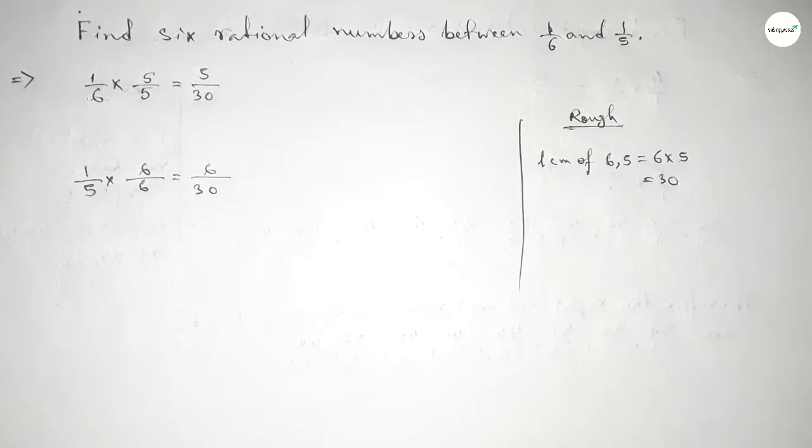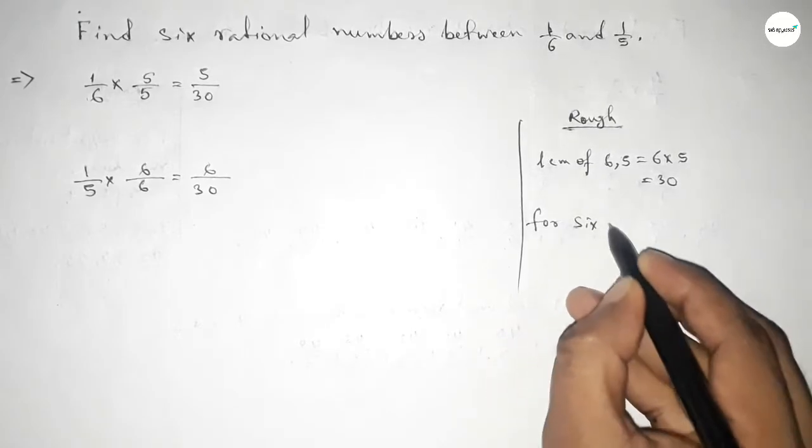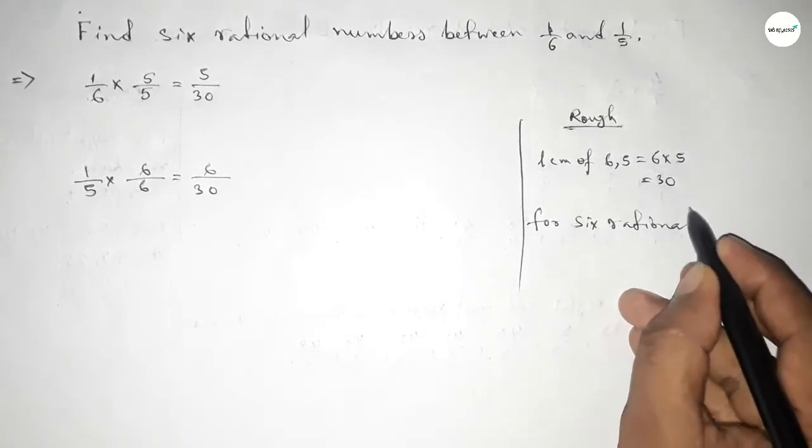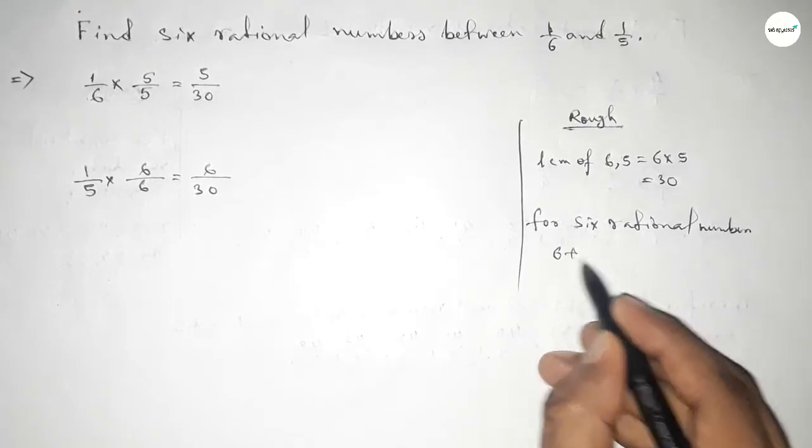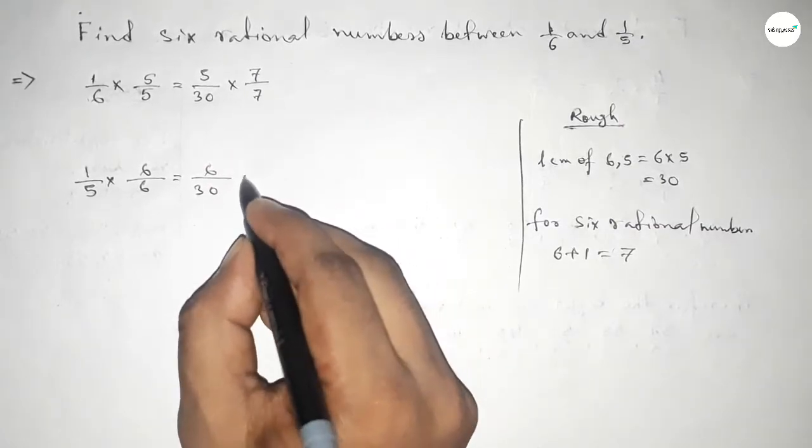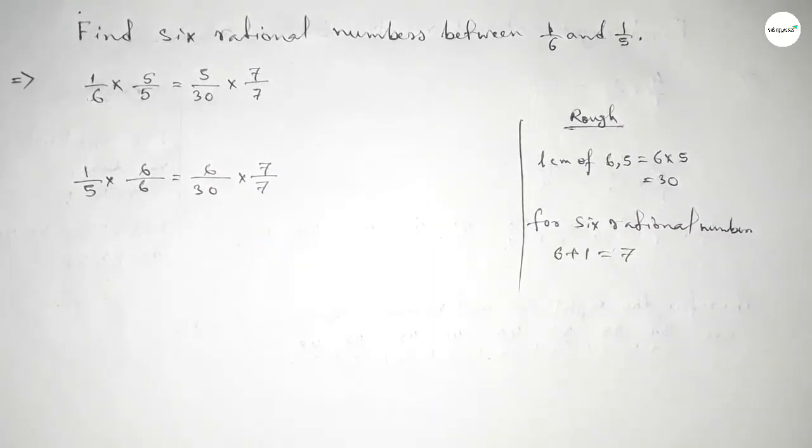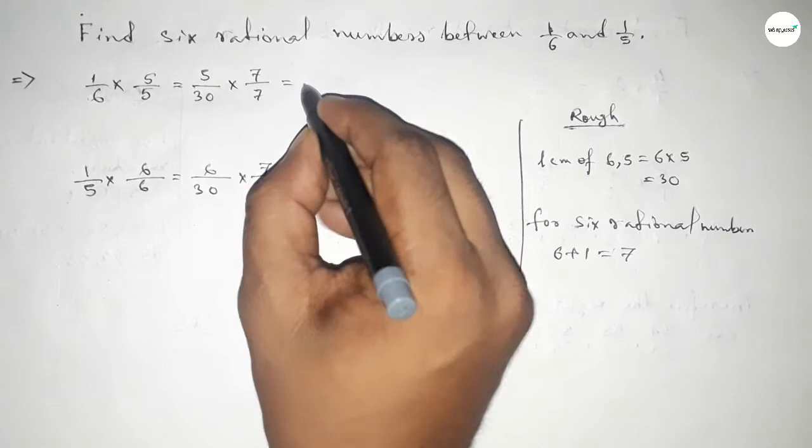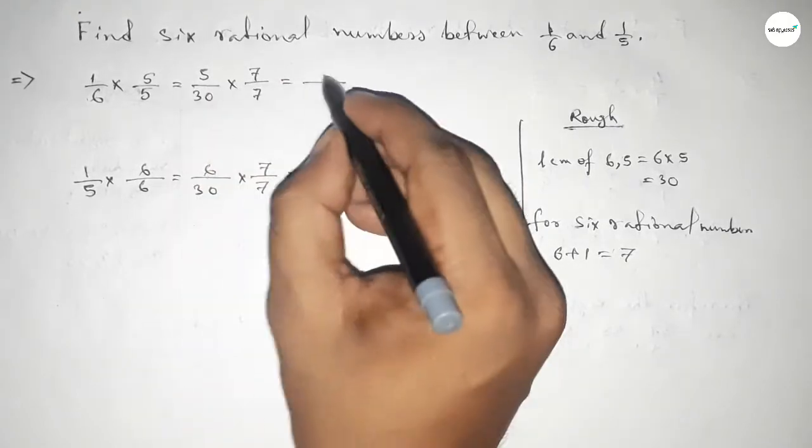For six rational numbers between any two numbers, we follow this method: multiply both fractions by 6+1=7 in numerator and denominator.